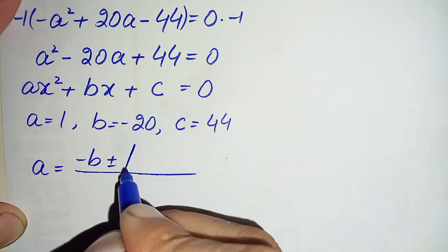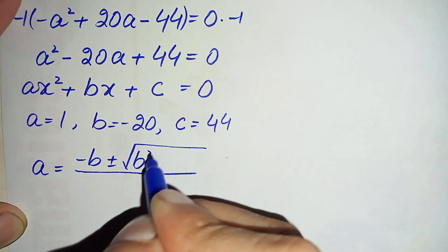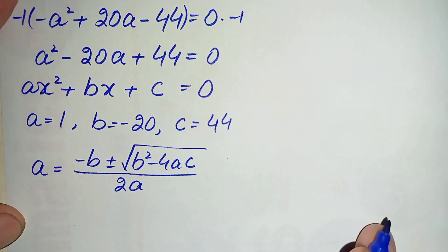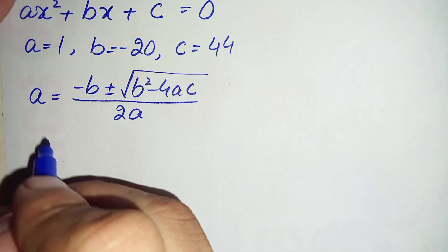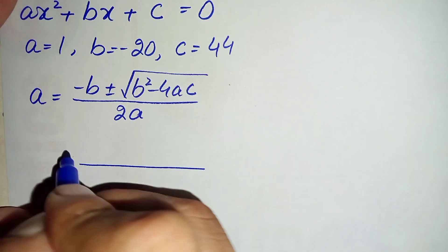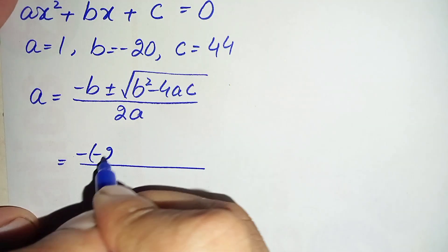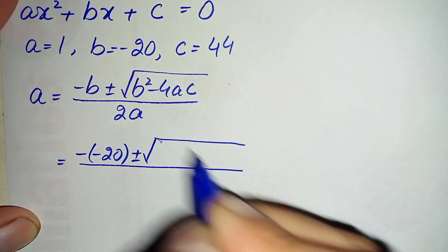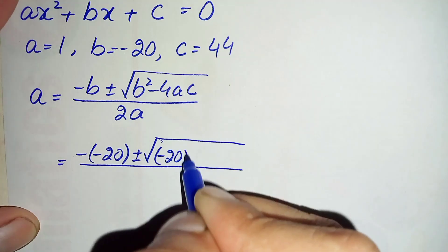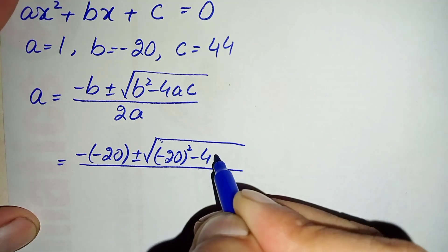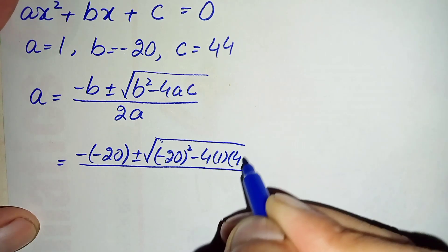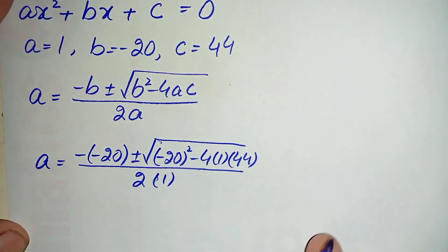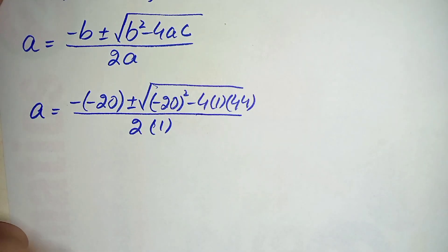The quadratic formula is x equals minus b plus or minus the square root of b squared minus 4ac, all divided by 2a. Substituting our values: minus b is minus (minus 20), under the square root we have (minus 20) squared minus 4 times 1 times 44, divided by 2 times 1.